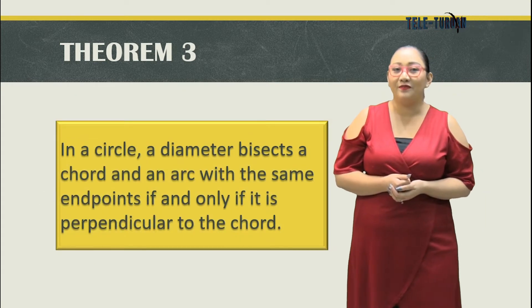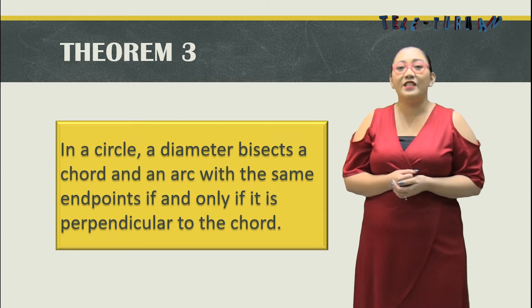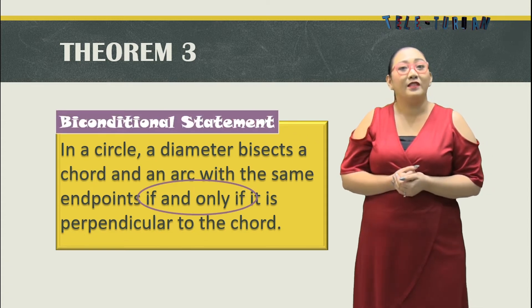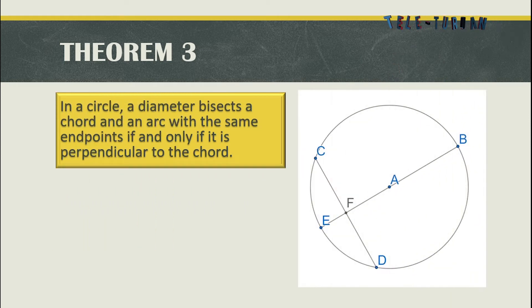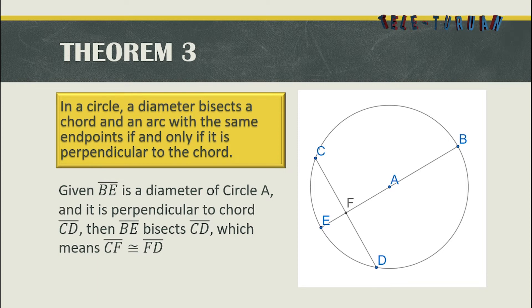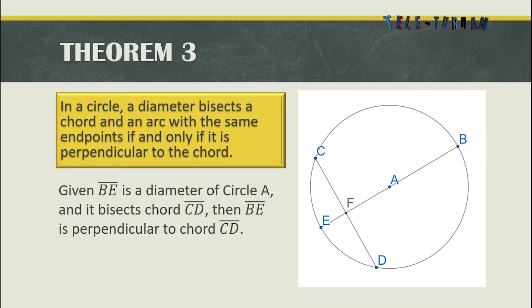Theorem number three: In a circle, a diameter bisects a chord and an arc with the same endpoints if and only if it is perpendicular to the chord. In circle A, given that BE is a diameter and it is perpendicular to chord CD, it will bisect chord CD — meaning segment CF is congruent to segment FD. It also bisects the arc, meaning arc CF is congruent to arc FD.